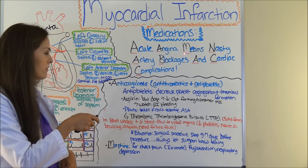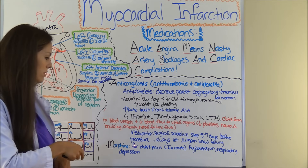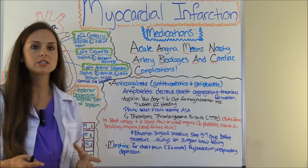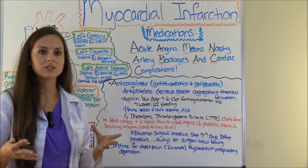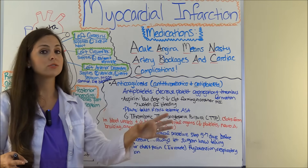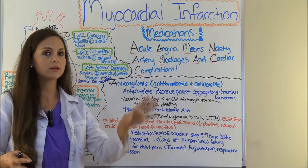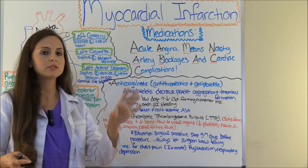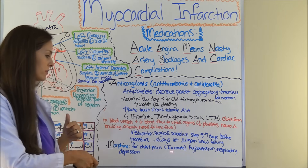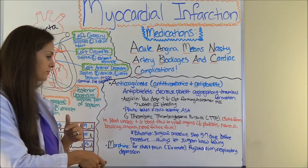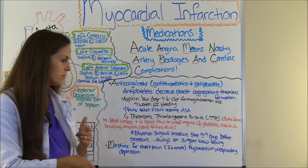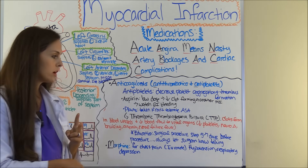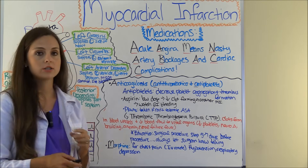The next part of the mnemonic is M for morphine. This is prescribed in acute situations when the patient is having chest pain — a lot of times nitroglycerin is not even relieving the pain. Morphine helps and is usually given via IV route. However, watch for hypotension — lowering of blood pressure — and respiratory depression.